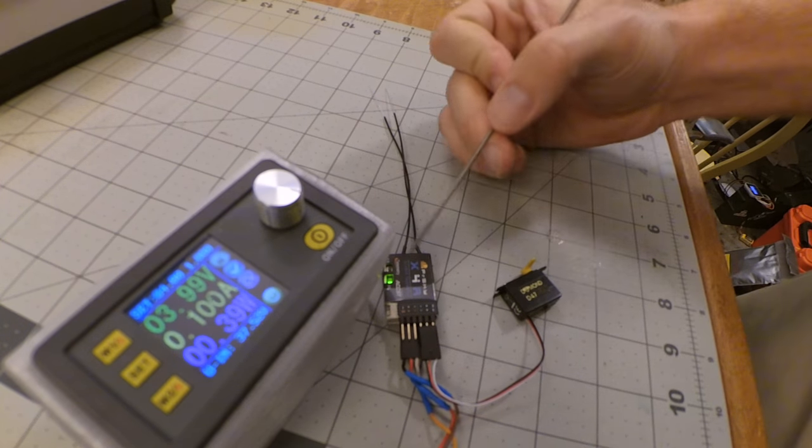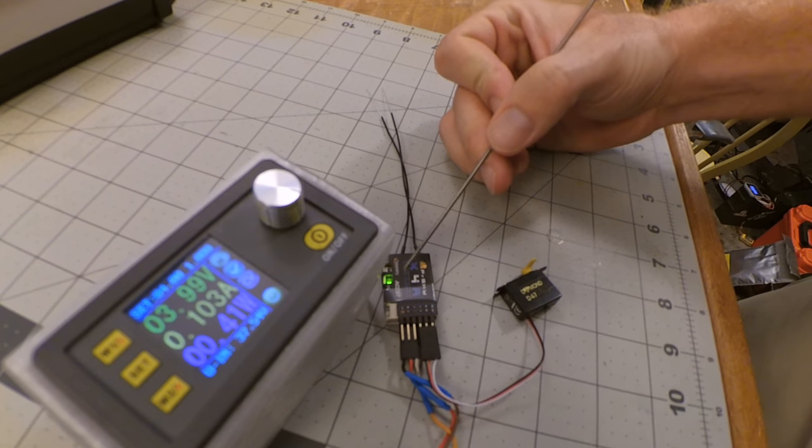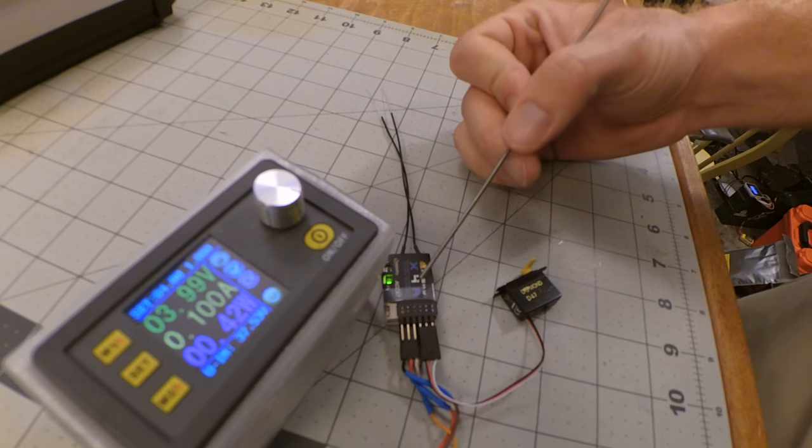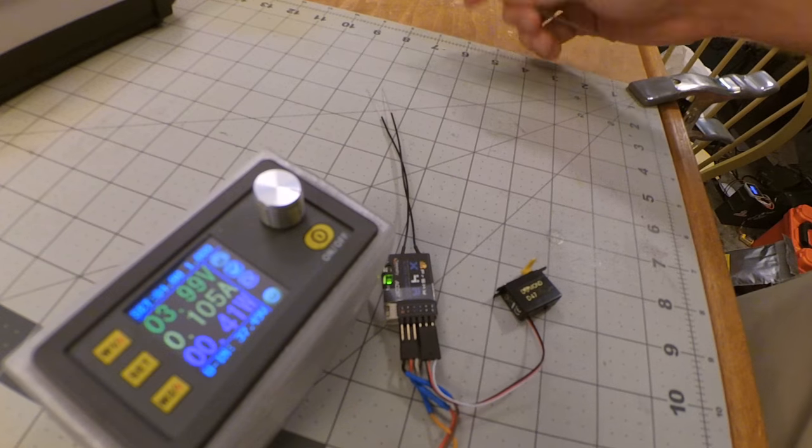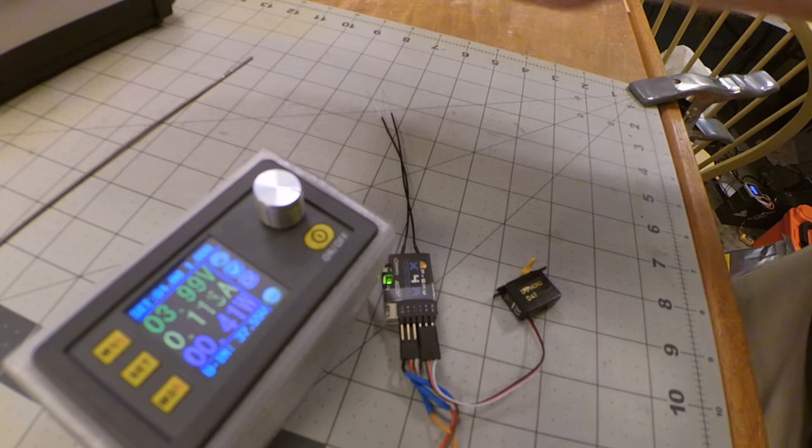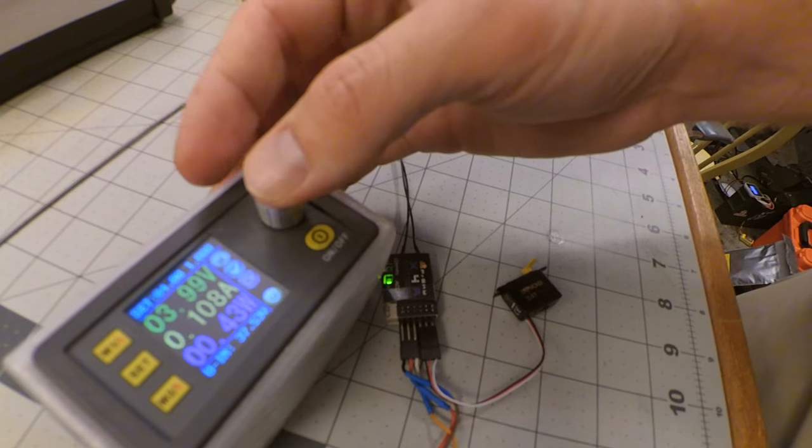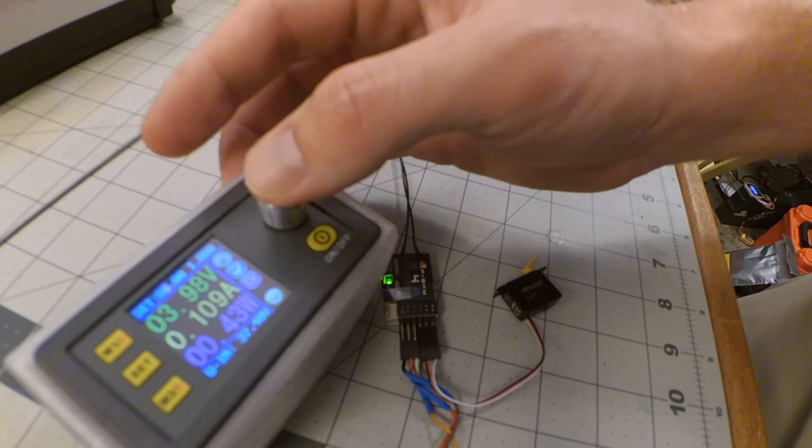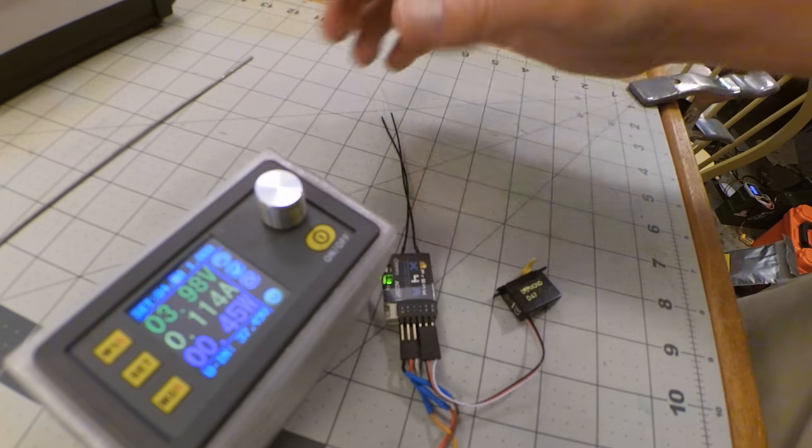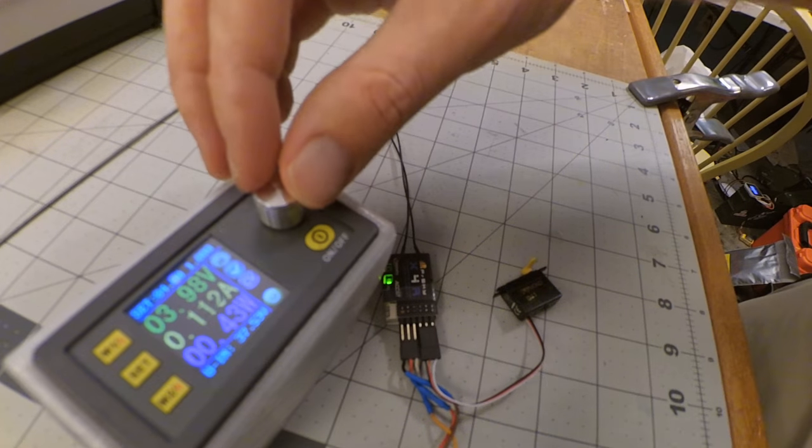So you do have to make settings changes other than just the protocol in the Taranis in order to get the right telemetry back. So now we can start dropping voltage and see what happens.